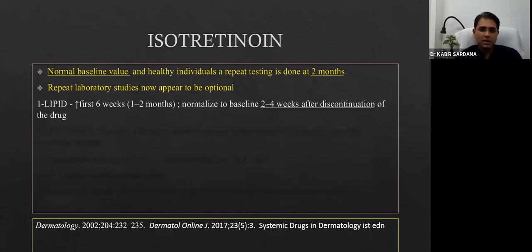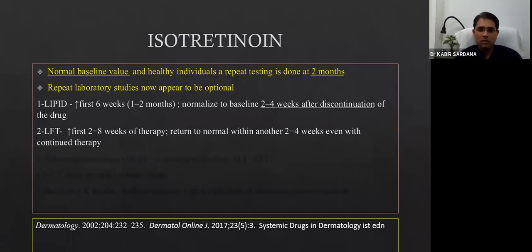I'm going to cover the few important ones. Lipids—there will be progressive increase in the first six weeks, it will normalize to baseline in two to four weeks after stopping therapy. It's going to happen to most patients. You can give drugs like omega-3 fatty acids to prevent it. LFTs—there will be a rise in the first two to eight weeks, they would stop and become normal after four weeks. The most important thing now is look for GGT level, not ALT or AST. GGT is specific for liver damage and has been shown in studies that isotretinoin probably uses this as the better marker.